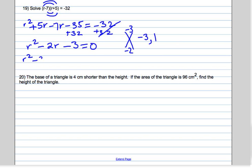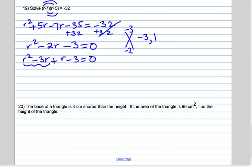Now we factor by grouping. These two both have an r in common, we get r minus 3.